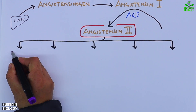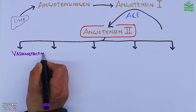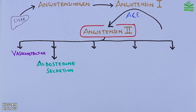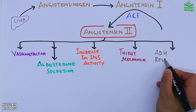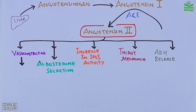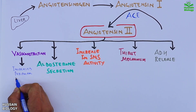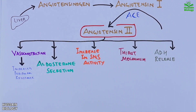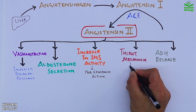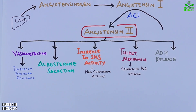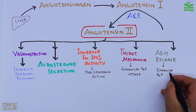Angiotensin 2 has a plethora of effects. First, it causes vasoconstriction. Second, it drives aldosterone secretion from zona glomerulosa. Third, there is an increase in SNS activity. Fourth is the thirst mechanism, and fifth is ADH release. Vasoconstriction leads to increased peripheral resistance, increased SNS activity leads to norepinephrine actions, the thirst mechanism leads to enhanced water uptake, and ADH drives enhanced water resorption.